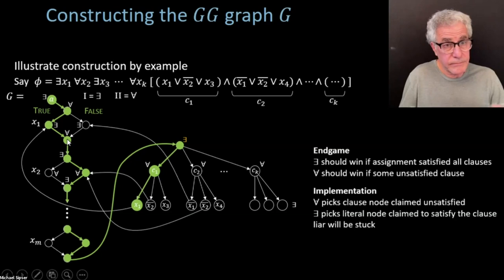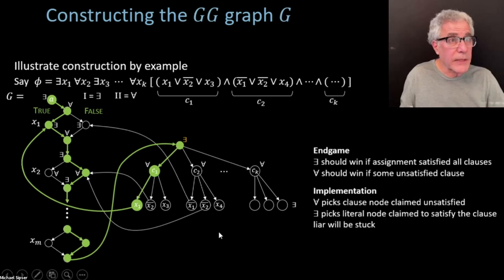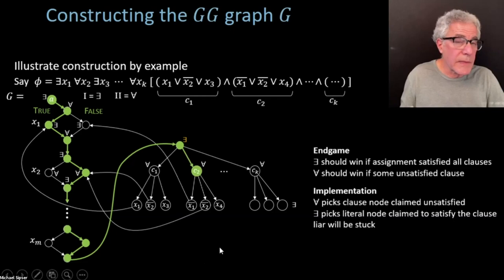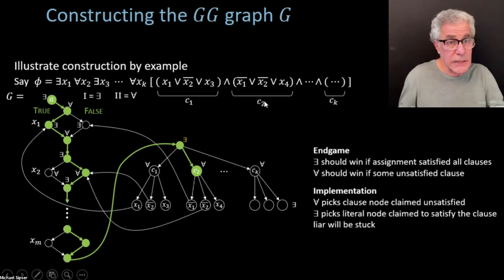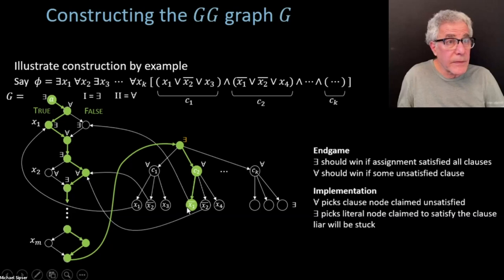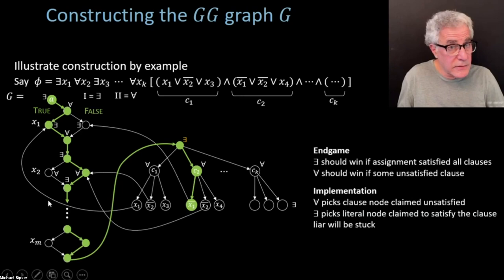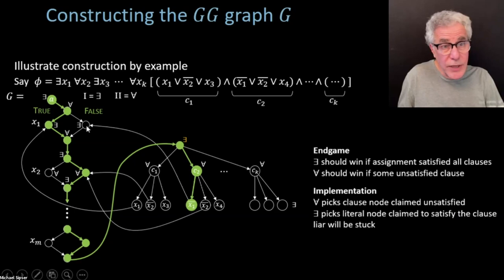But if the assignment had assigned that variable to false — the path went through the false side of the diamond — then that node is still unoccupied and ForAll can move there. Now Exist is stuck, because the node below is guaranteed to have been used. So the construction correctly implements: Exist wins if and only if the assignment satisfies all clauses, i.e., satisfies the formula.